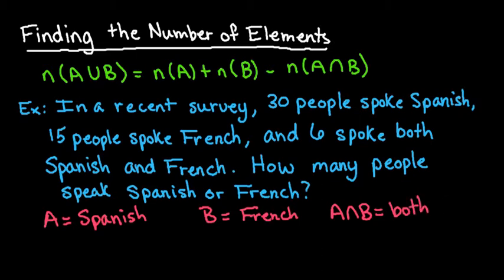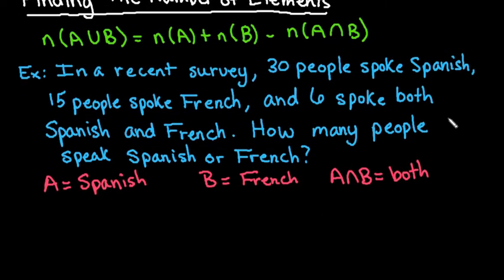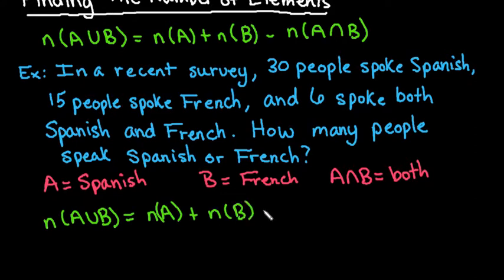We're going to use the formula up here that's given to us. The number in A or B is equal to the number just in A plus the number just in B minus the number that are in both A and B. So let's go through and find that information.